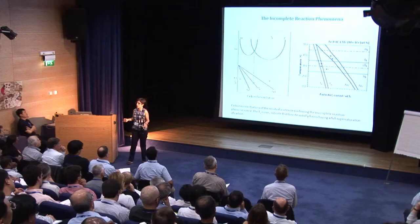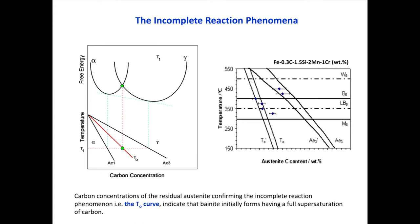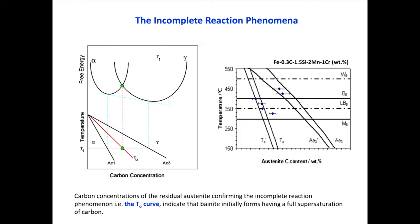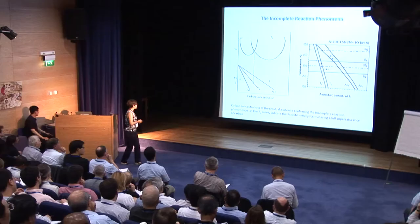What have we been doing all these decades? Instead, we have looked at the carbon content in the residual austenite when the transformation had finished — what we call the incomplete reaction phenomenon. It is an indirect validation of the diffusion-less nature of the transformation. We measure by X-ray analysis the carbon content in the retained austenite. If that carbon content, when the transformation has finished, follows the thermodynamic limit given by the AE3 line, then we can state that growth was carbon-diffusion controlled. But if the carbon content is much lower and follows what we call the T0 limit, then we can state that the growth was diffusion-less.